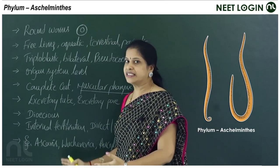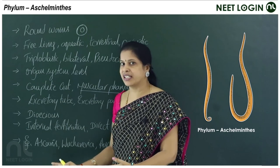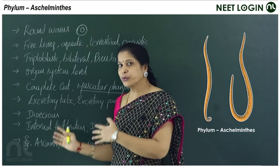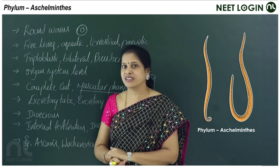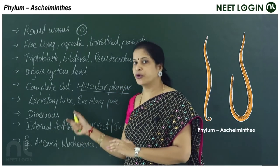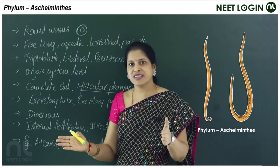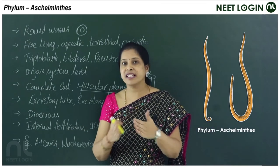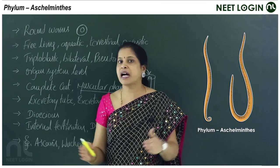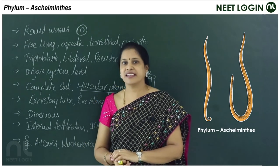Key NEET points for Aschelminthes: complete gut, pseudocoelomate, tube-within-a-tube organization, and sexually dimorphic structures — male and female clearly demarcated from each other.